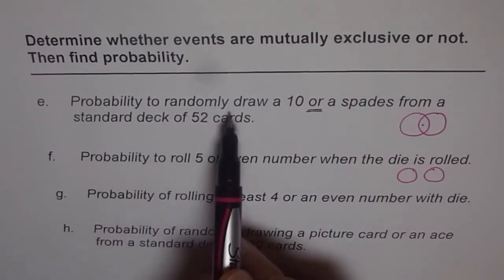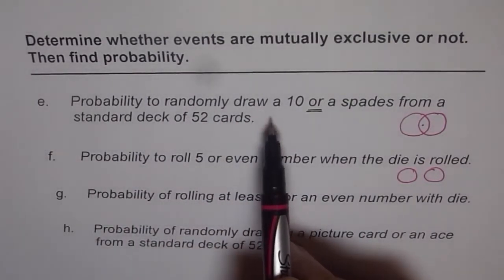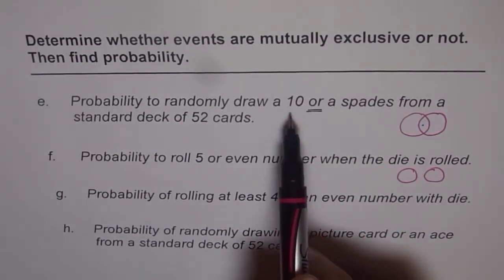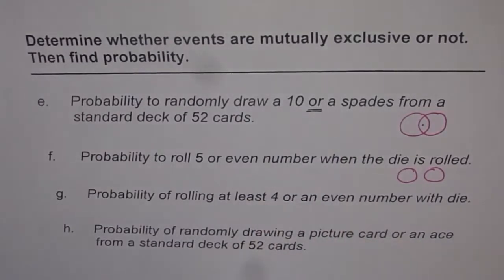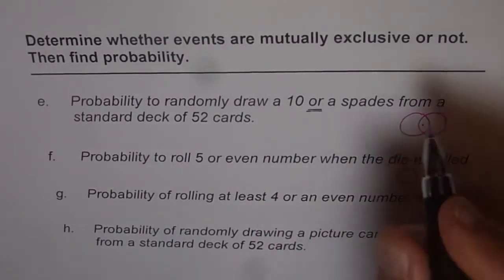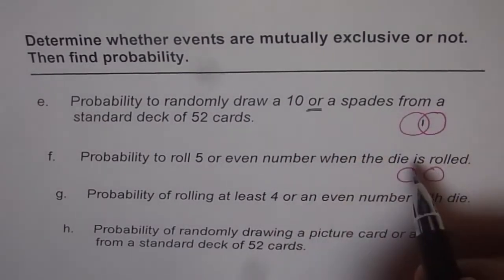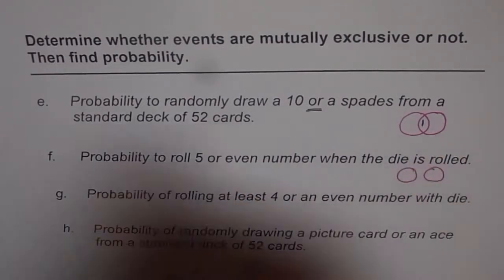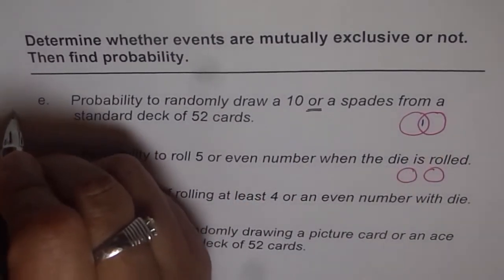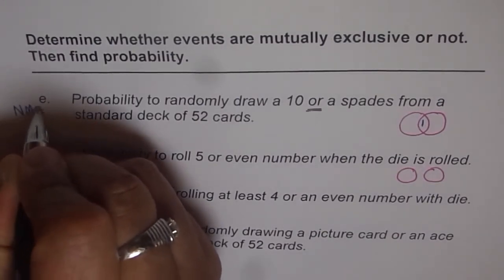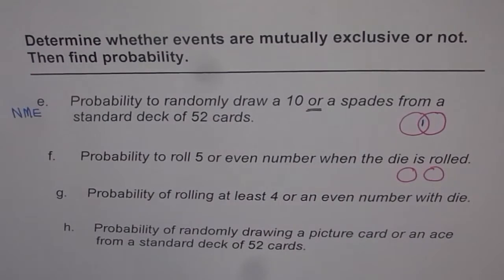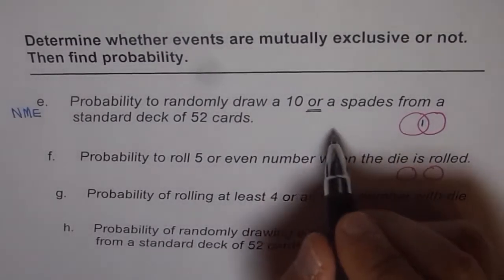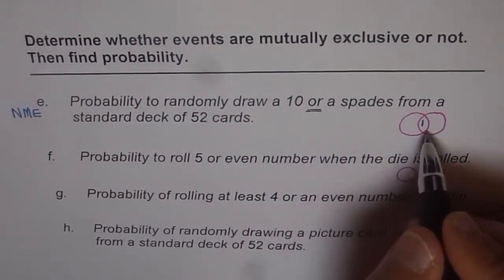When we say probability of randomly drawing a 10 or a spade, in a deck of cards there are four 10s, and one of them is the 10 of spades. So we do have one element in common, which is the 10 of spades. Therefore, it is not a mutually exclusive case — not mutually exclusive. That means there is something common between the two events.